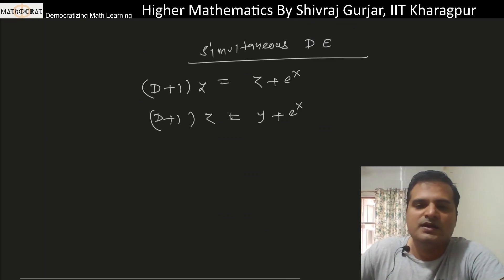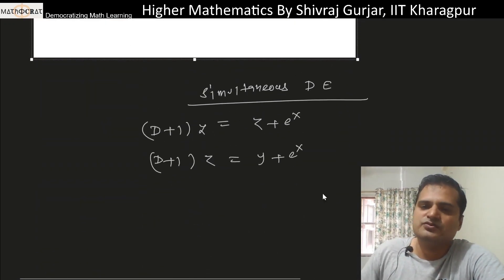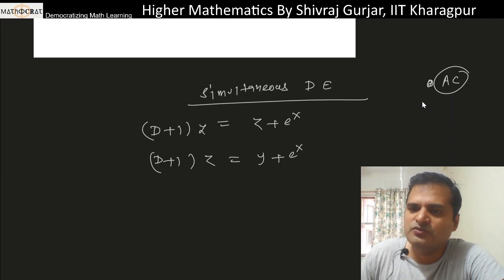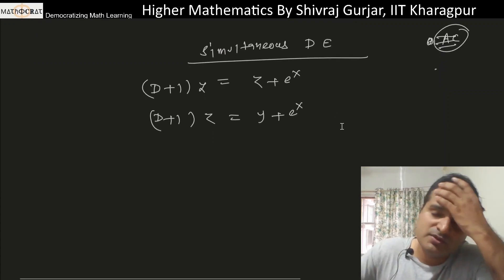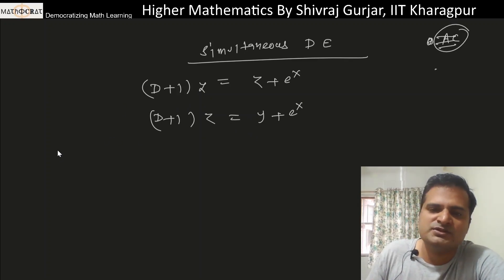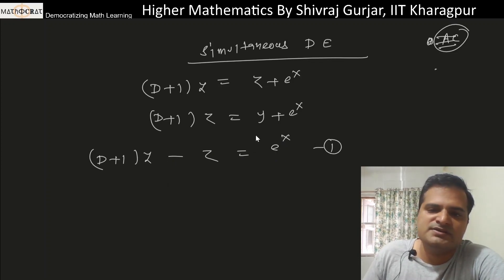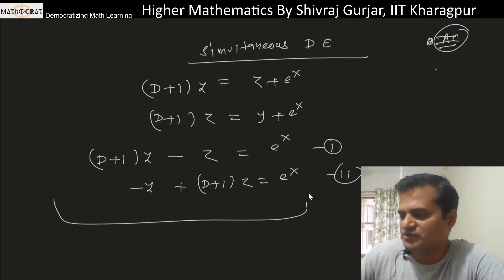With respect to x, differentiation with respect to x. This is the case. These are linear equations we can solve. We can say (D+1)y minus z equals e^x - this is the first equation. The second equation is -y plus (D+1)z equals e^x. We rearranged them.